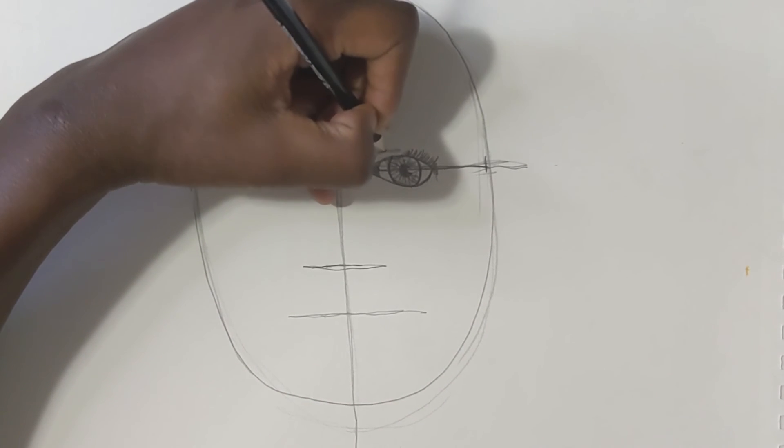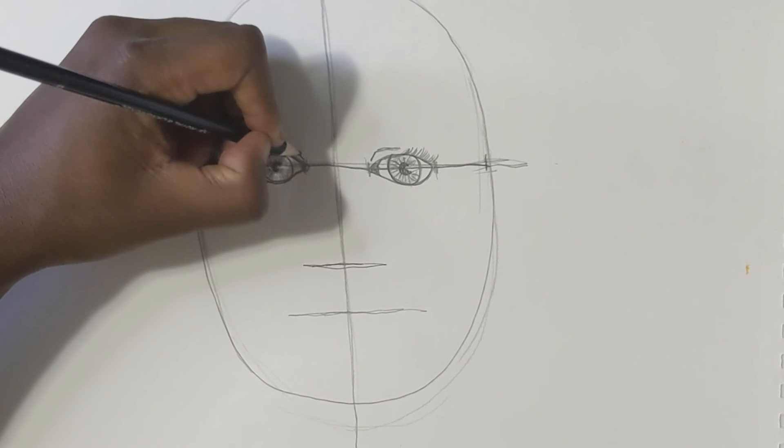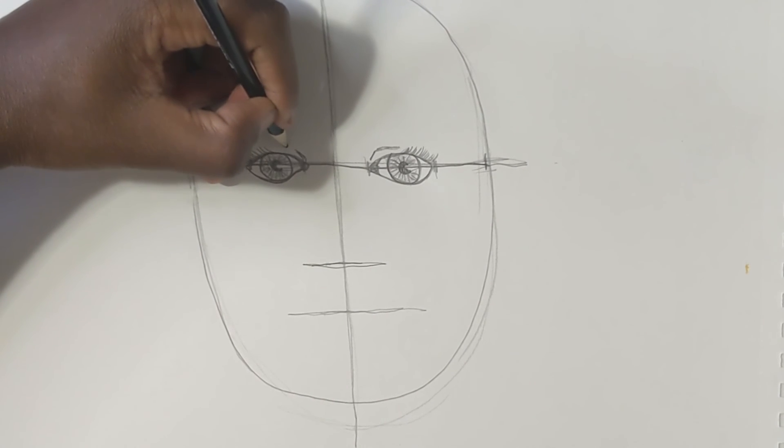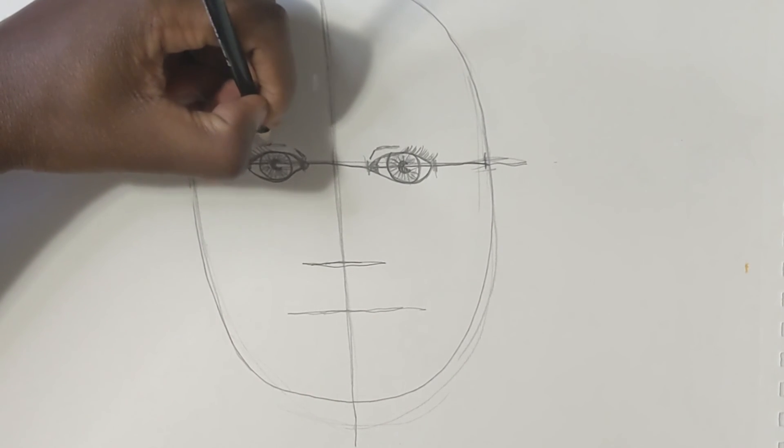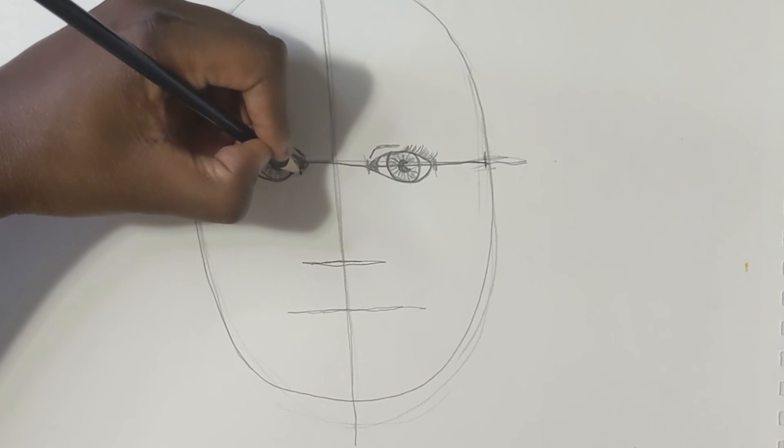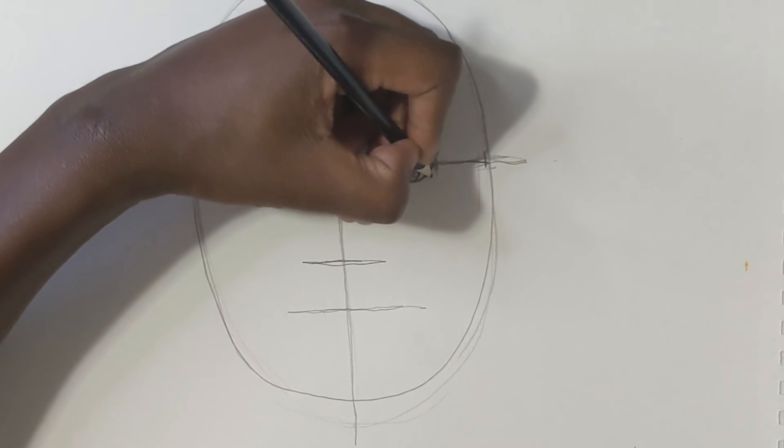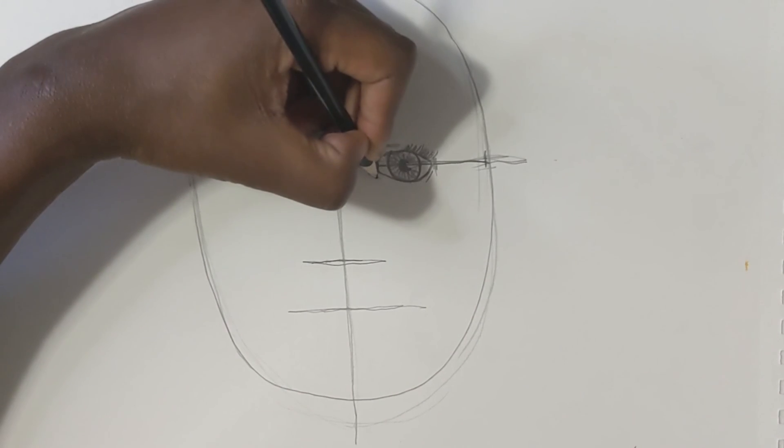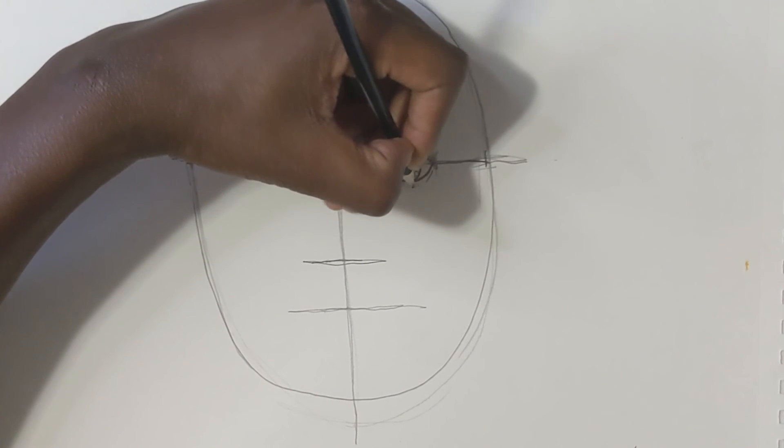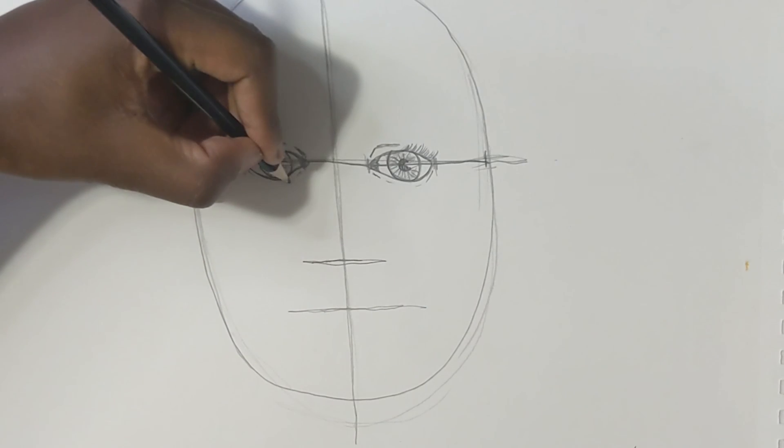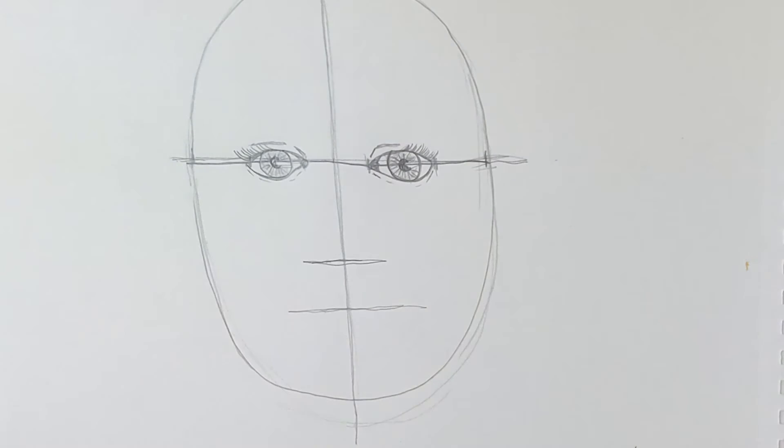There we go, some subtle lines down on the bottom. Same thing - I don't want my eyes to look all wrinkly, so I'm not going to make them go all the way. I'm just going to make some light lines so we know that the eyelid is there.